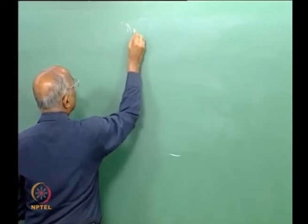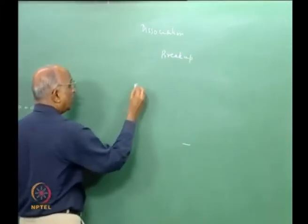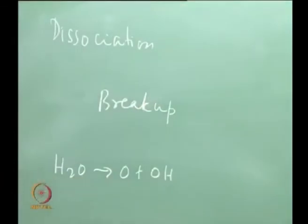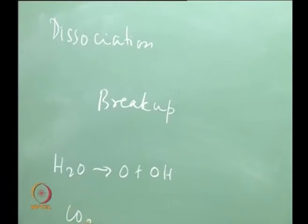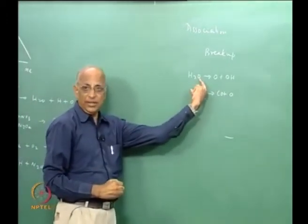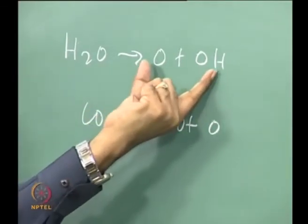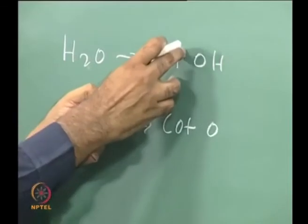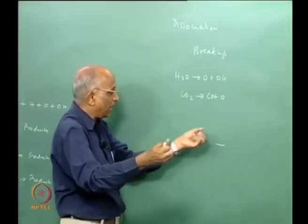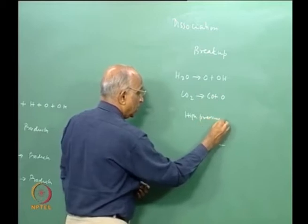Dissociation means breaking up — water breaks up into O plus OH, CO2 breaks up into CO plus O. This breakup is possible at extremely high temperatures. At high pressure, the pressure snubs this reaction. The amount of dissociation is much less at high pressure than at low pressure, because at low pressure the ambient pressure is small and something can dissociate and multiply, whereas at high pressure this is not possible.